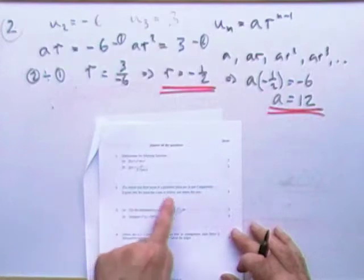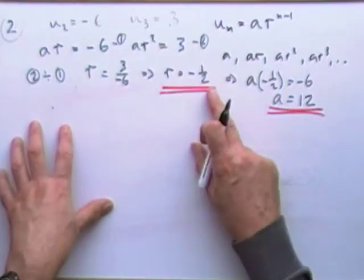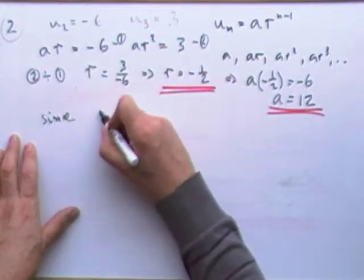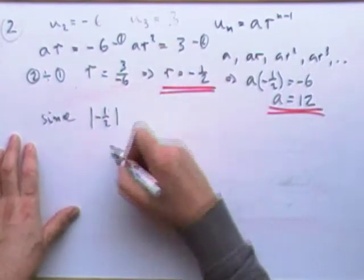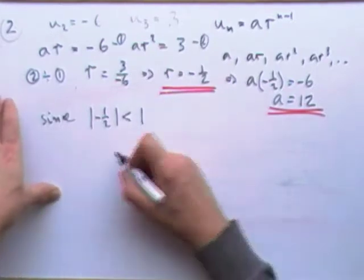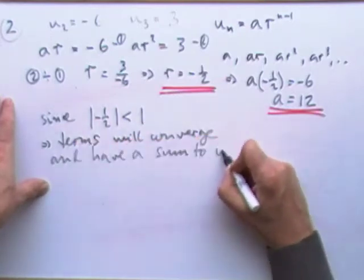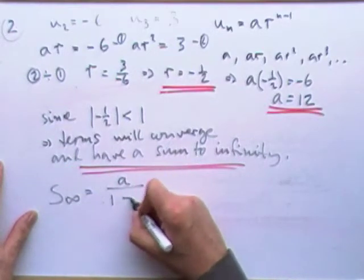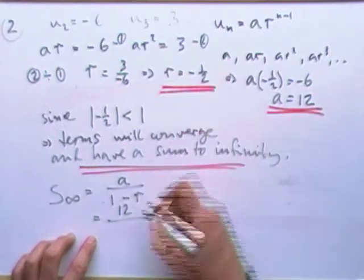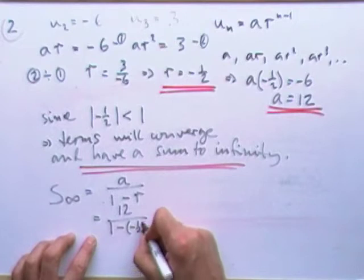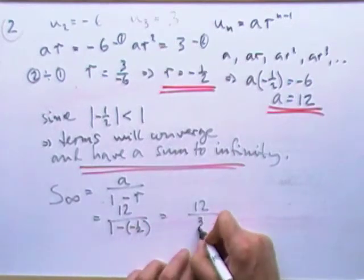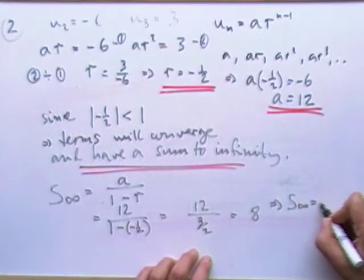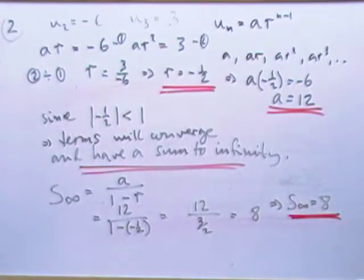To find a, you could put it back into this one. If r is negative 1 half, that means a times negative 1 half is negative 6. So a would be negative 6 multiplied by negative 2, so a would be 12. Explain why the series has a sum to infinity and get that sum. The multiplying ratio is a proper fraction, so the terms will converge. The sum to infinity is a over 1 minus r, which is 12 over 1 and 1 half, which equals 8.